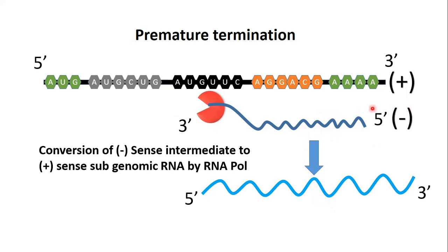An important distinction: in the case of internal initiation, a plus sense subgenomic RNA is produced directly. But in the case of premature termination, first a negative sense intermediate is produced, and then from that negative sense intermediate, by the help of RNA polymerase, a positive sense subgenomic RNA is created. This subgenomic RNA undergoes translation and produces several viral proteins, and these viral proteins help the viruses combine together and initiate successful infection.